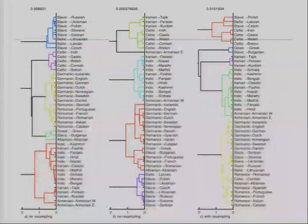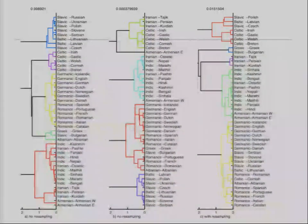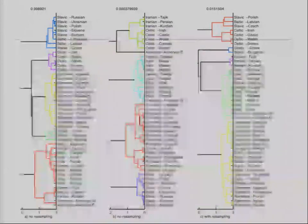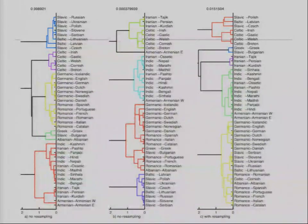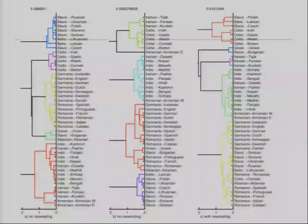To re-emphasize, this is totally unsupervised. You only give the feature vectors and the settings of the hyperparameters — in this case, only one hyperparameter, which is the mutation rate. Then it finds the clustering automatically.